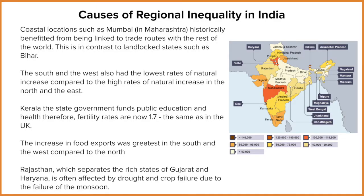We can see a map on the right-hand side of the screen, and this represents the GDP — that's the gross domestic product. You can think of GDP as the amount of money that an area earns based on the products and services that it sells. The darker the colour, the greater the GDP for that state. Places like Goa and Maharashtra have the highest GDP, while lighter colours like Bidar have some of the lowest.